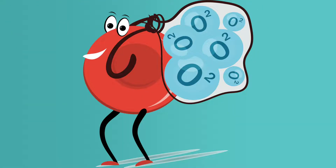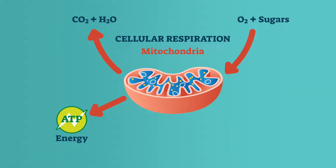Cells absolutely require oxygen to do their work. With oxygen and the food we eat, cells form the molecule that our body uses for chemical energy. This process is called cellular respiration. In this series of chemical reactions, cells produce the carbon dioxide waste product that we've mentioned several times.